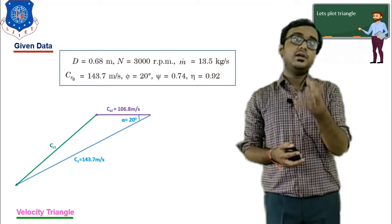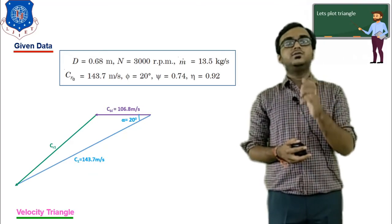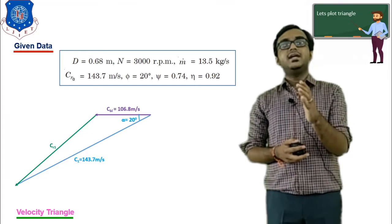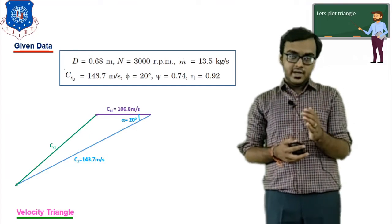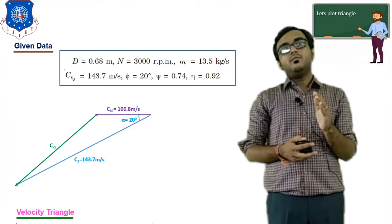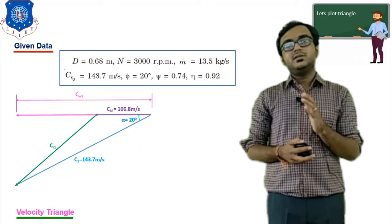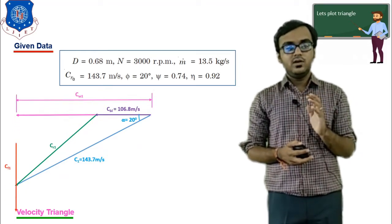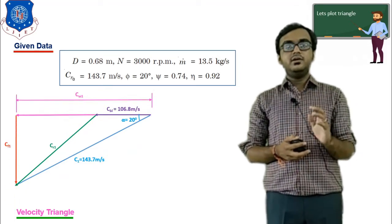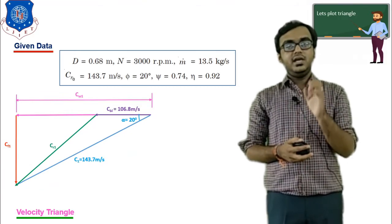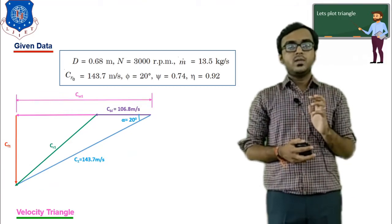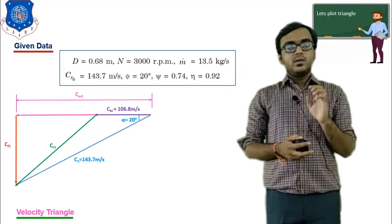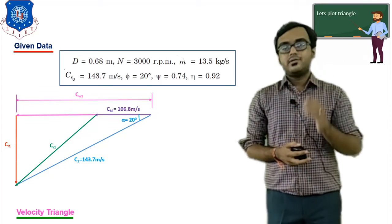Using the two vectors, we plot the resultant vector which represents the relative velocity of steam at inlet when steam contacts the blade. The vertical component of C1 is the flow component Cf1, and the horizontal component is the whirl component Cw1. This completes the inlet velocity triangle.